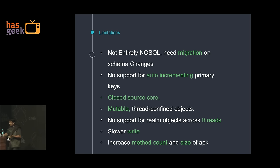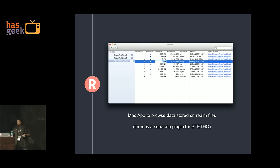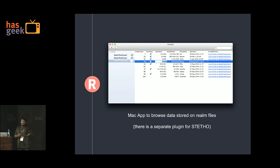Some additional things: there is the Realm Browser, a Mac utility. You can pull the Realm files — by default stored in the context.getCacheDir directory — and use this browser to browse the data and see anything you want. There is also a Stetho plugin available so you do not have to pull it manually.